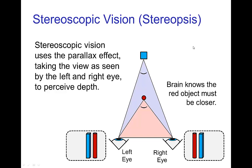Stereoscopic vision, or stereopsis, is the type of binocular vision that we have with our two eyes seeing a different scene due to parallax. So when we have a red object closer to us and a blue object farther away, the two eyes see a slightly different view. And from those two different views, the brain can figure out that the red object is closer and the blue object is farther away.